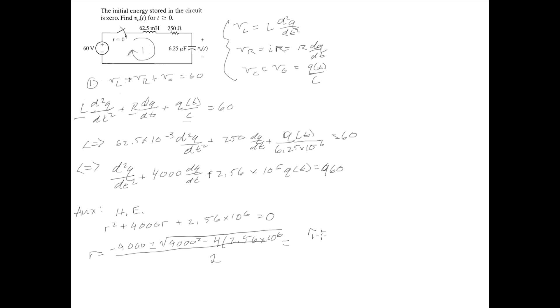you'll just find that the values for r, we're just going to say r1 equals, because we get two different r values, r1 equals -800, and r2 equals -3200. These are the values that we get for r1 and r2.